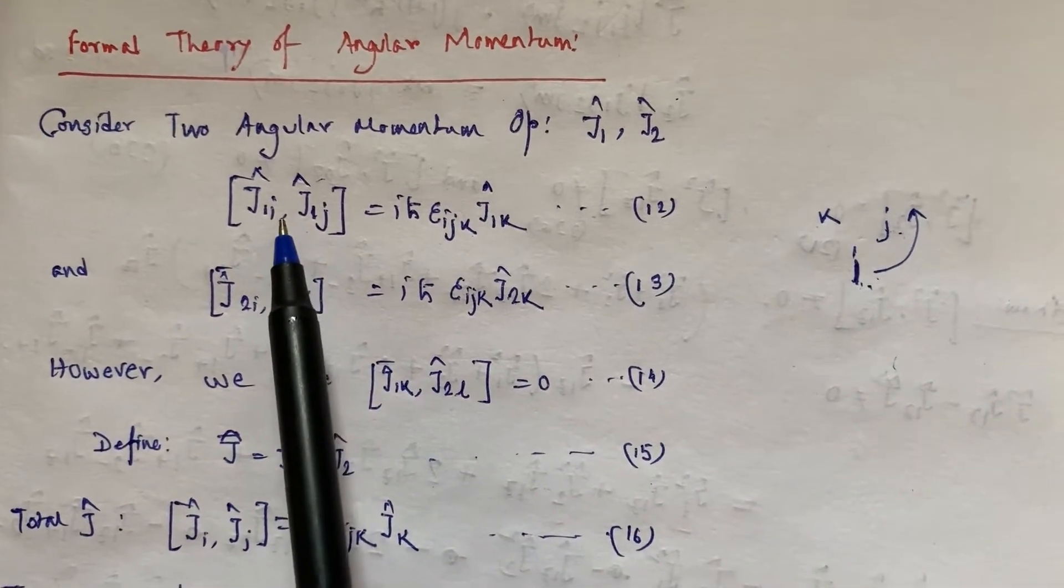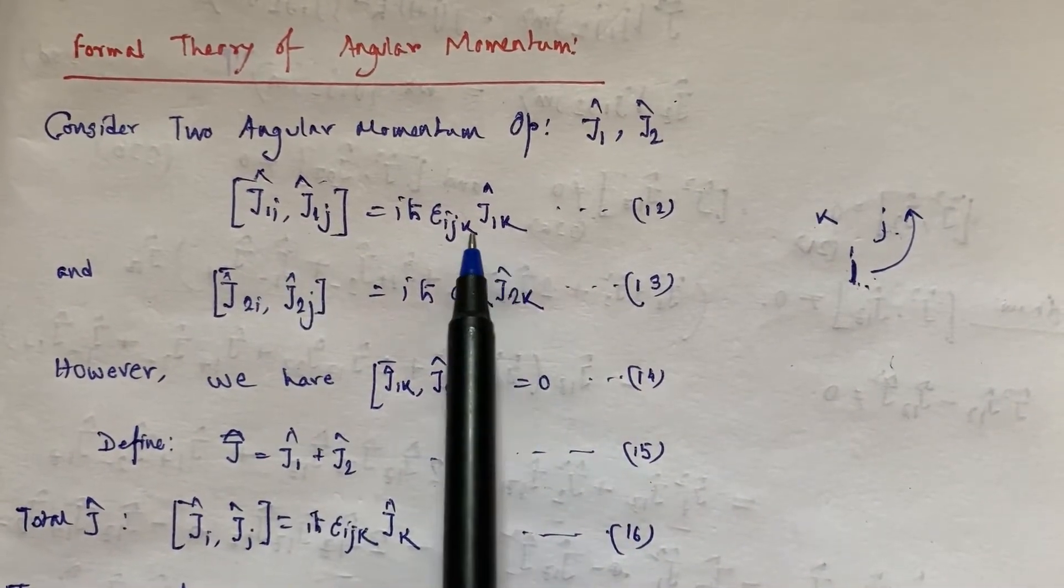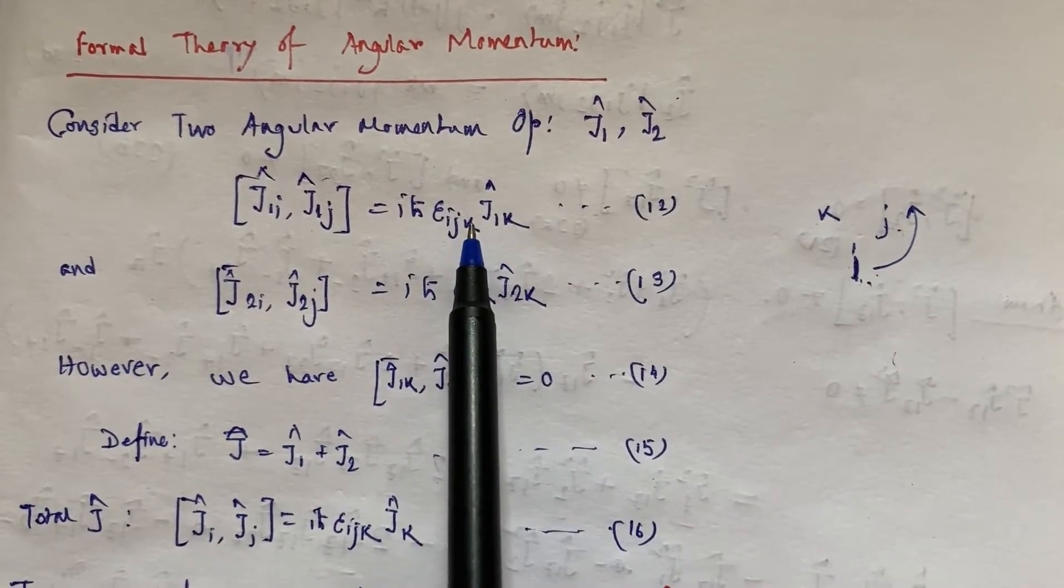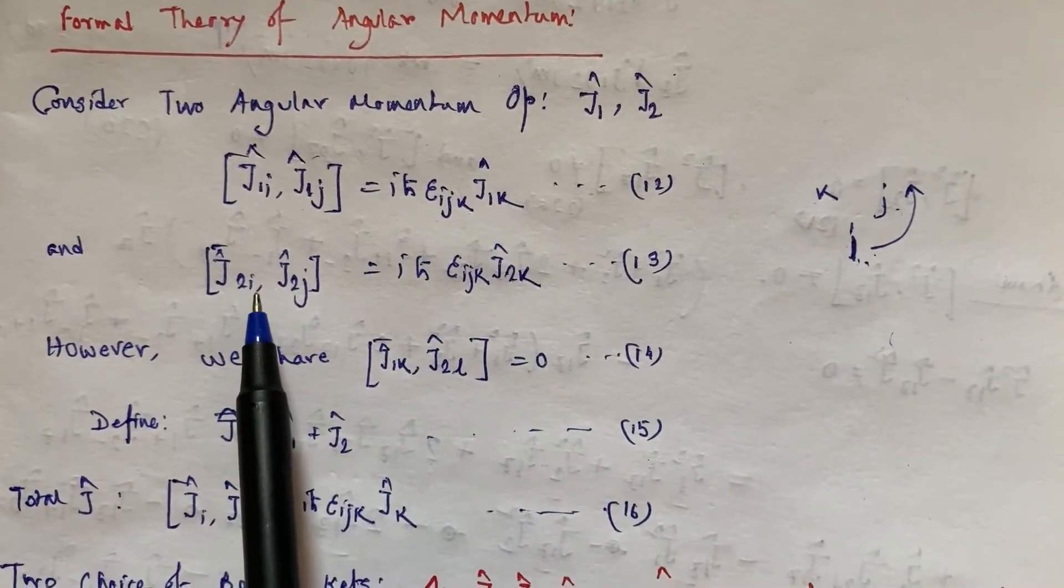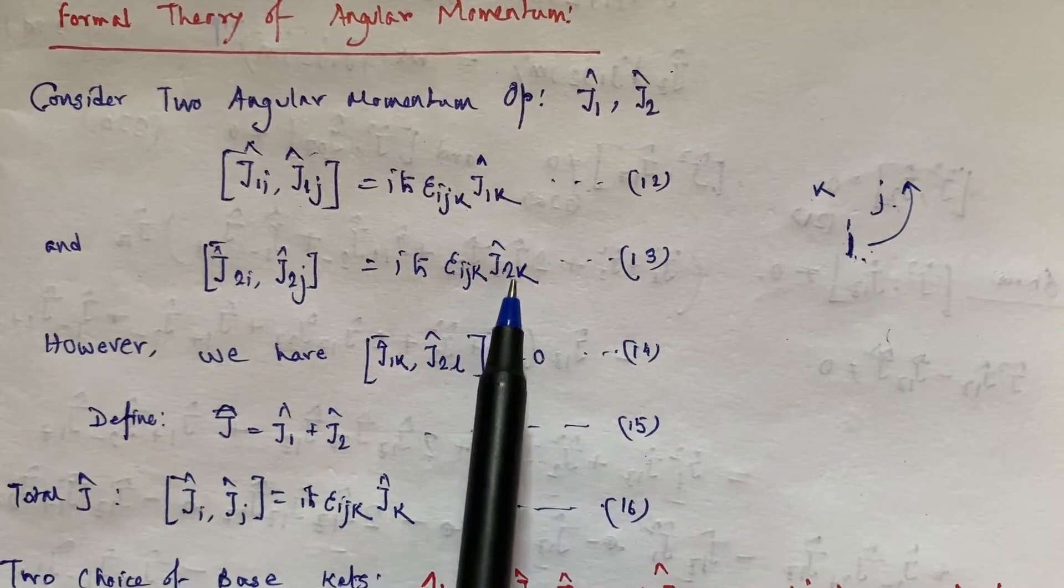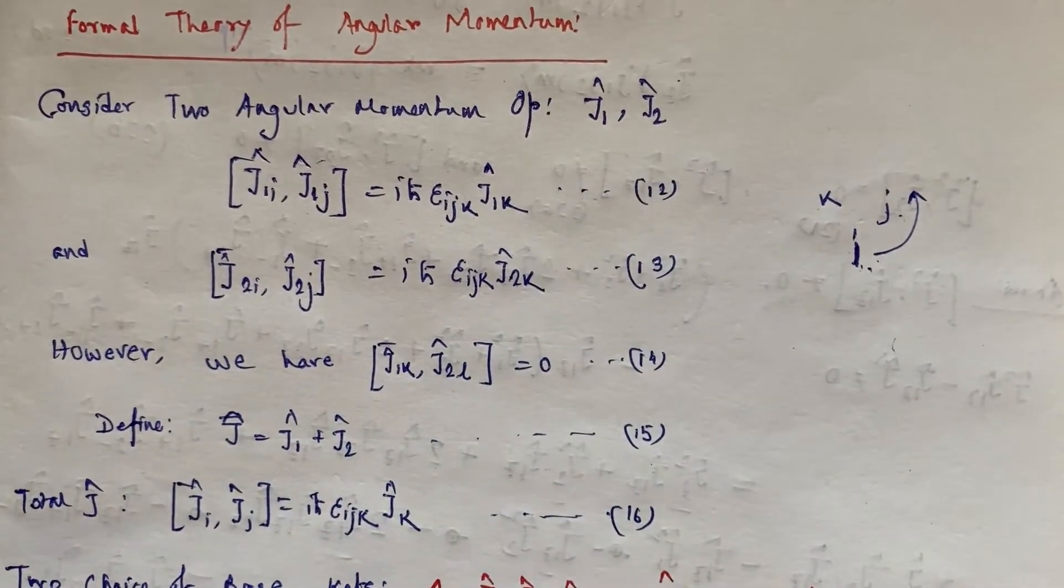In that case, if here is j and here is i and here is k, this will produce a minus sign here. And this commutation relation also holds for this J₂ angular momentum value.